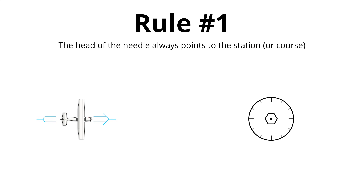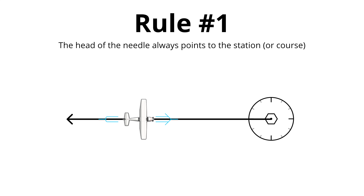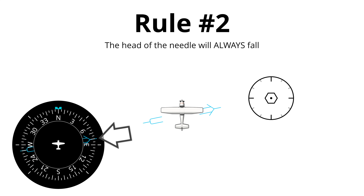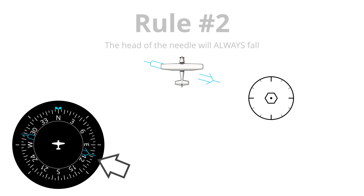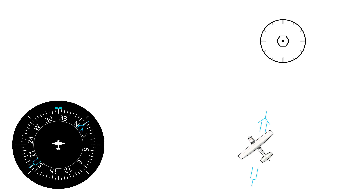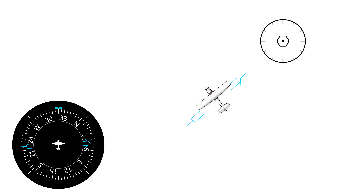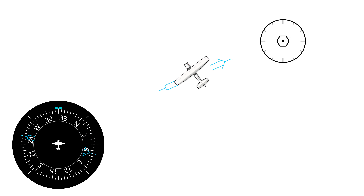There are two golden rules about any kind of bearing pointer navigation — whether it's an ADF, an NDB, or a bearing pointer in a glass panel airplane. First, the head of the needle will always, always point toward the station or to the desired course. Second, if you're not turning or going backwards, the head of the needle always falls. If you hold your wings level and fly in any direction, the head of the needle will always fall.